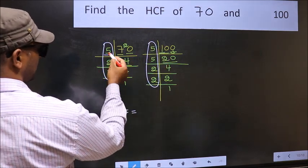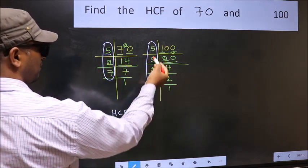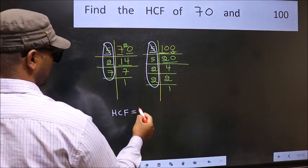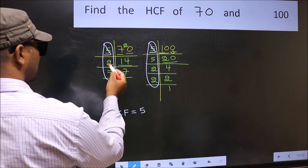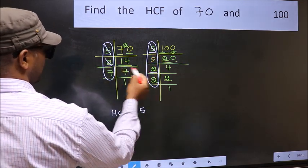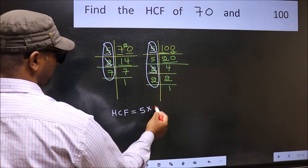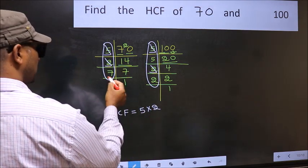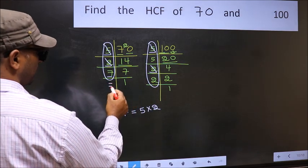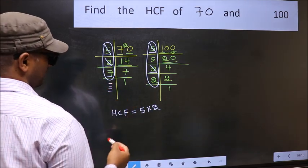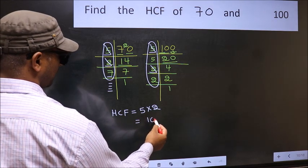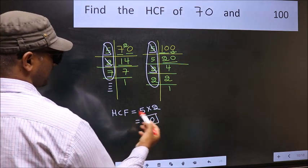Starting with the number 5. Do we have 5 here? Yes. So cut 5 right here. Next number 2. Do we have 2 here? Yes. So cut 2 right here. Next number 7. Do we have 7 here? No. No more numbers have been left out. So our HCF is 5 into 2. 10 is our HCF.